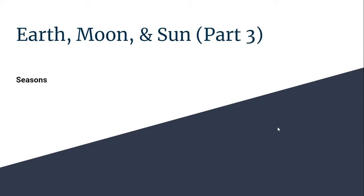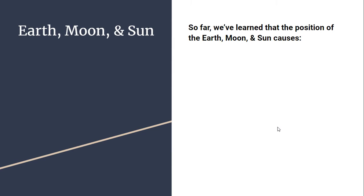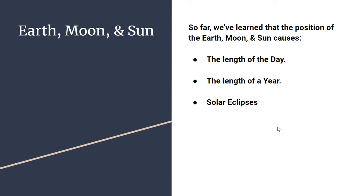Hello science students and welcome to today's lesson about Earth, Moon, and Sun. We're on to our third and final part of this idea, and we're focusing on the concept of seasons. As you probably recall, the relationships between the Earth, Moon, and Sun are responsible for a lot of the things we see and experience here on Earth — things like the length of our day, the length of our year, solar eclipses, lunar eclipses, tides, and of course today's focus: seasons.